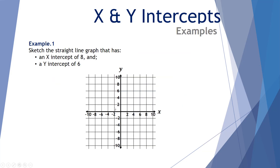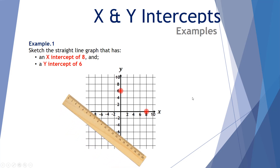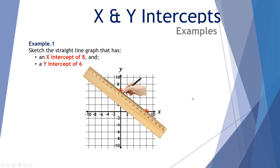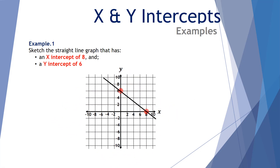Let's have a look at some examples. Example number one: sketch the straight line graph that has an x-intercept of 8 and a y-intercept of 6. Here's our value — x-intercepting at 8 and y-intercepting at 6. We have our two points. Now if we wish to sketch that, we simply get our ruler, draw our line, and we've got it. There's our sketch.